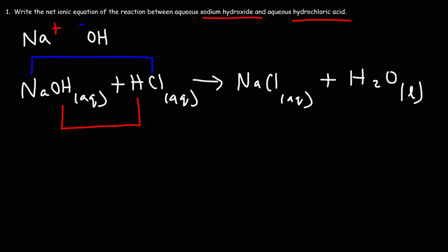Everything that is in the aqueous phase that is soluble in water, we're going to break up into ions. Anything that is not in the aqueous phase, we're going to leave it the way it is. So sodium hydroxide is in the aqueous phase. We can break that up into Na+ and OH-. HCl is also in the aqueous phase. So we can write that as H+ and Cl-. By the way, you could put aqueous for all of these ions.